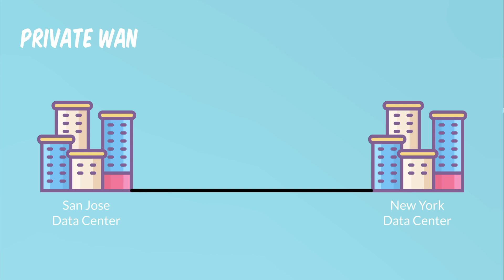Let's say we have two locations — San Jose Data Center and New York Data Center. If we end up procuring a dark fiber circuit from our service provider, that would actually be a layer one dark fiber circuit. The beauty of this circuit is that it's fully dedicated — it's like having a fiber optic literally buried in the ground between San Jose and New York, completely dedicated to us.